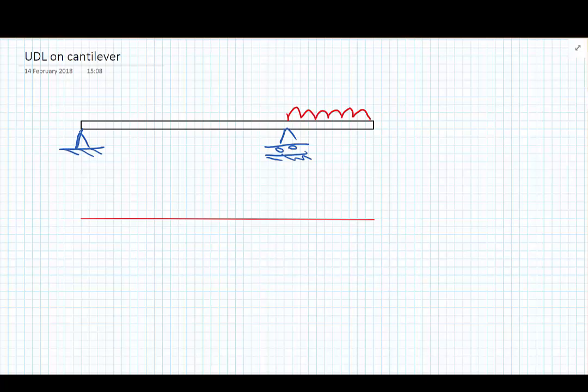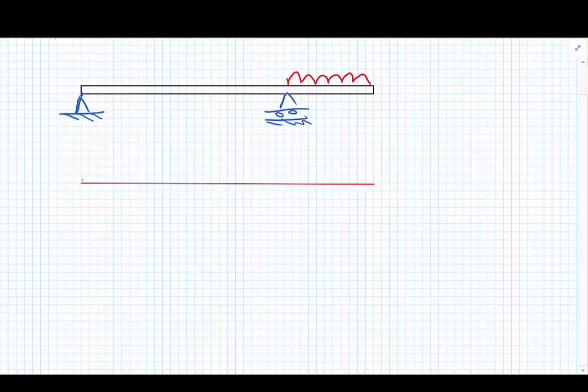So looking at this beam we know for definite from the support conditions that we will have no deflection in the y direction at the left hand support, and no deflection at the other support condition towards the right hand end.